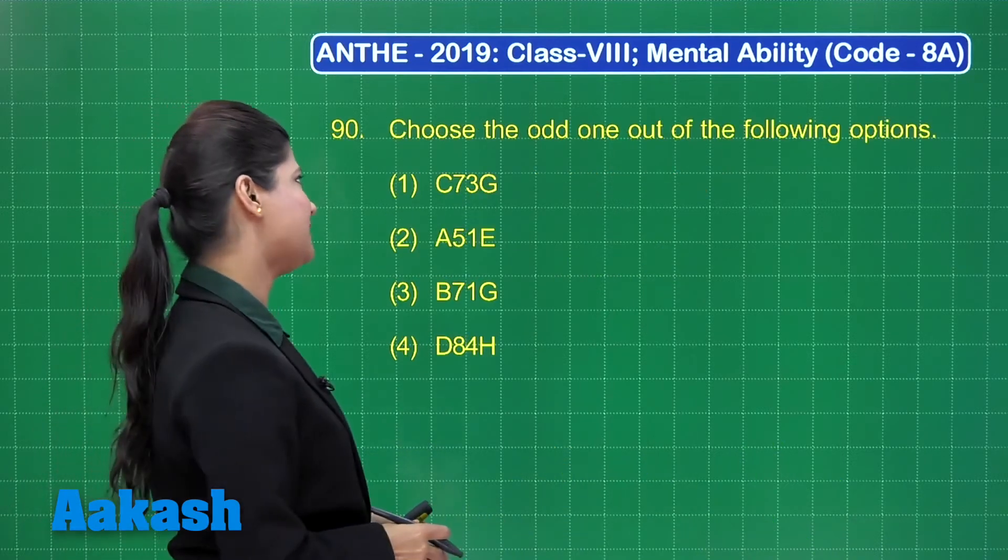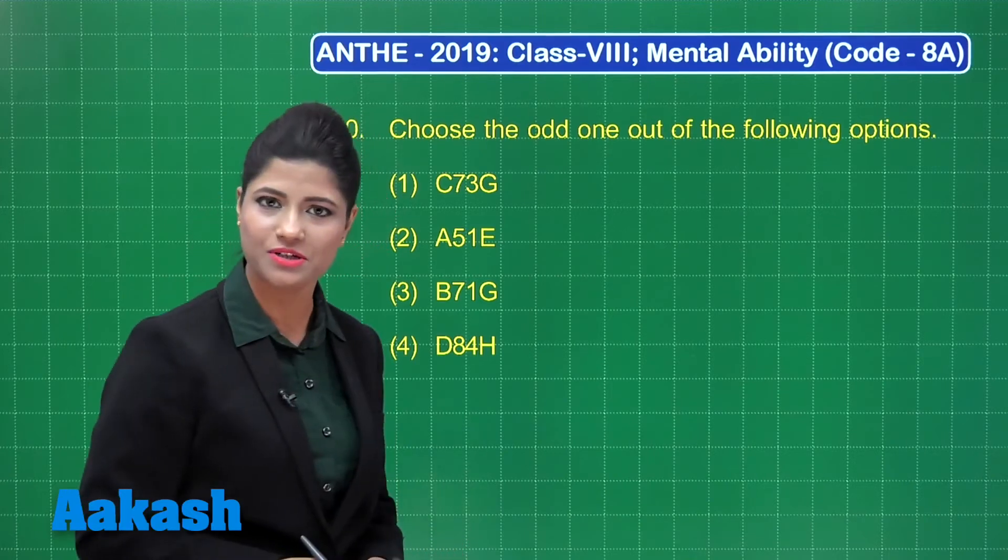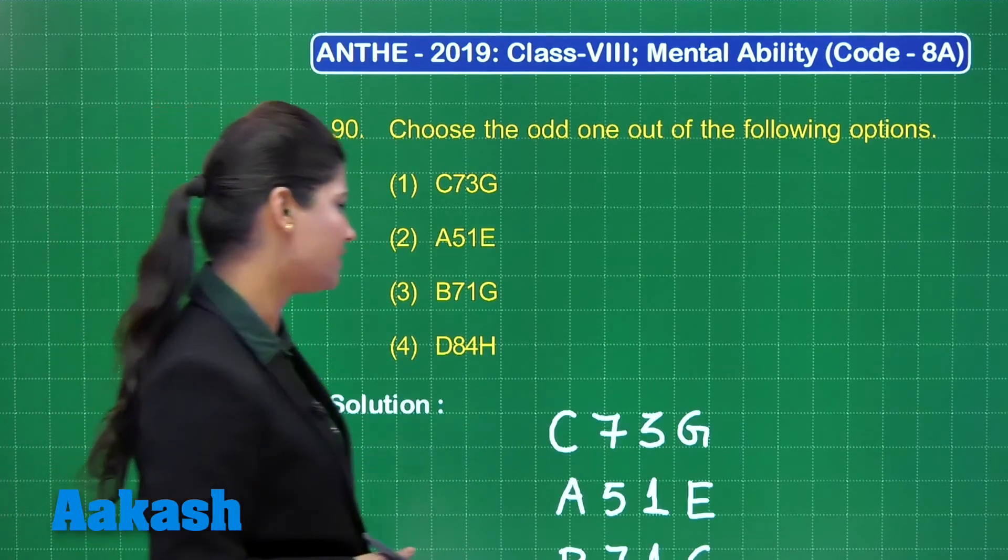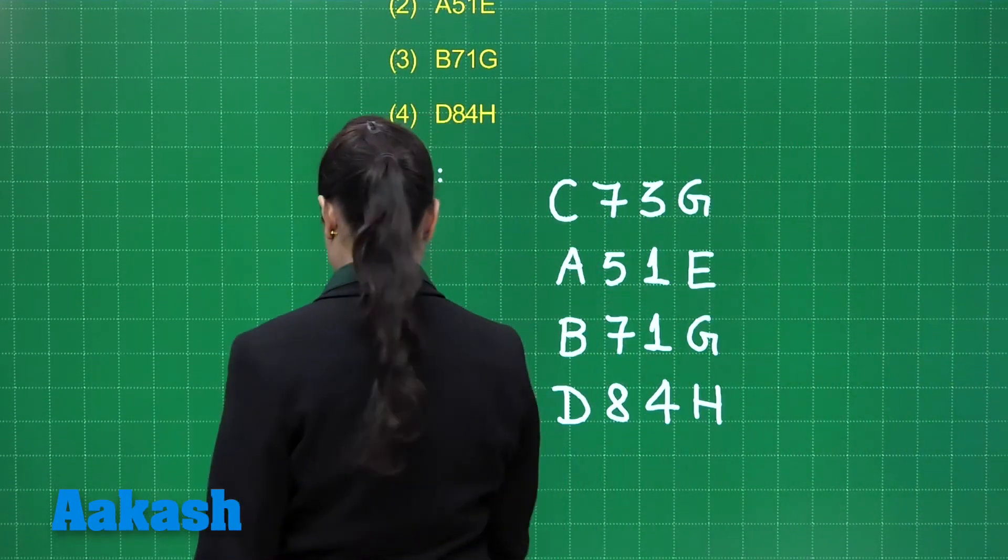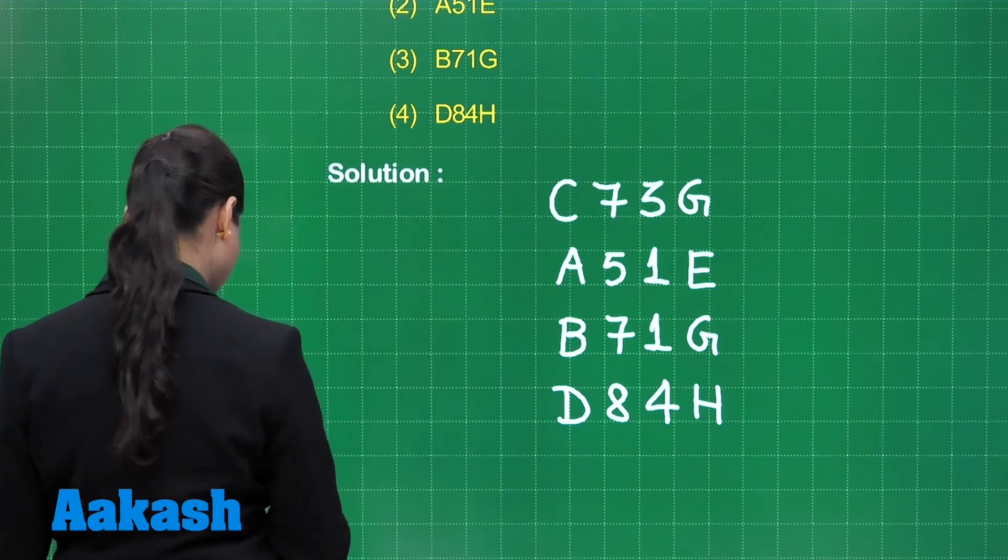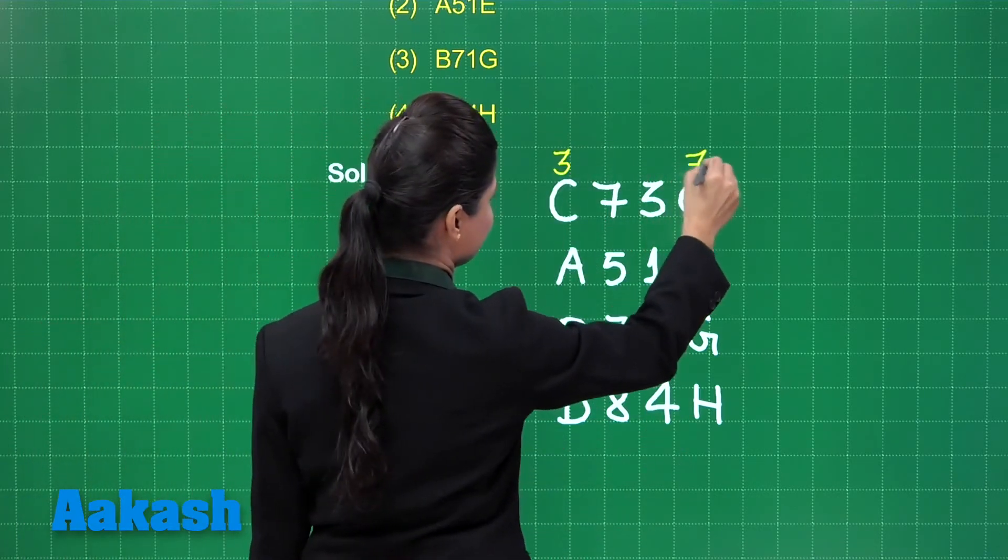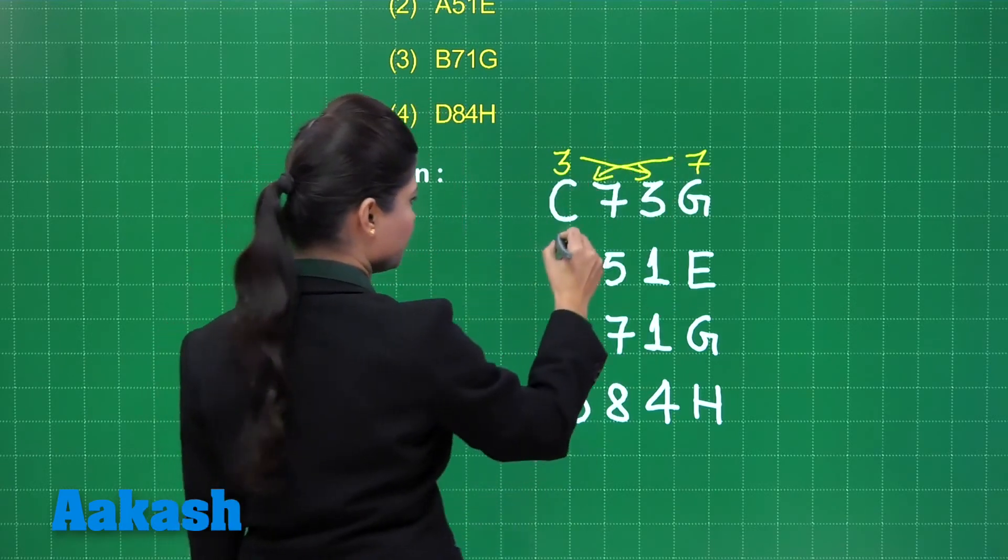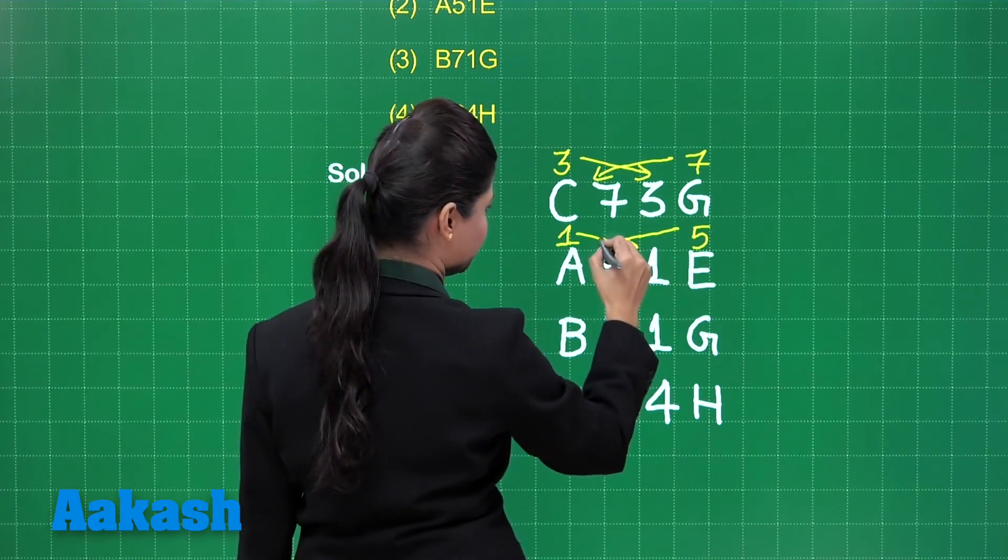Now let us proceed to our next question. Here I have question number 90. It states that, choose the odd one out of the following options. Here I have these four options. Let us try to figure out the pattern here. When you observe these four options in 1, 2, 3 and 4, you can clearly see C comes at 3rd alphabet position, G comes at 7. So it is clearly followed here. In similar manner, I comes at 1st alphabet position, E comes at 5. So it is clearly followed over here.